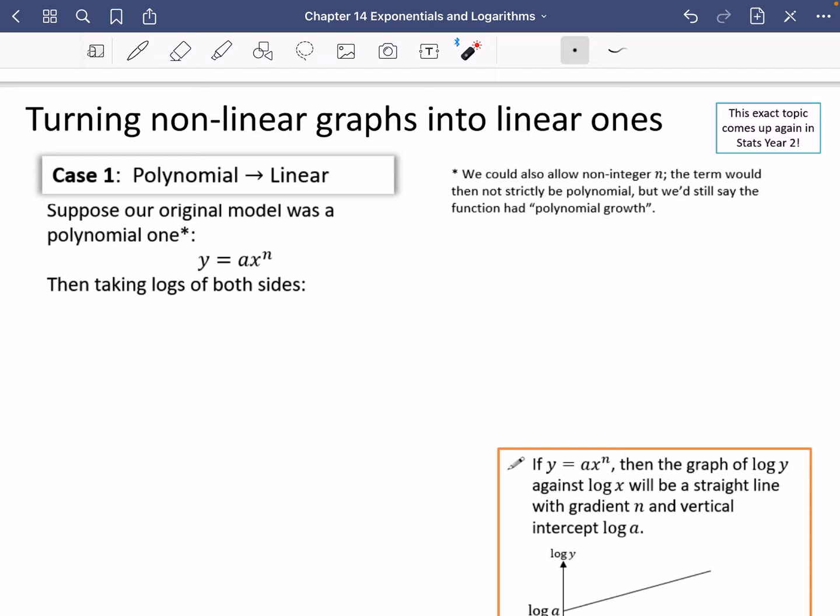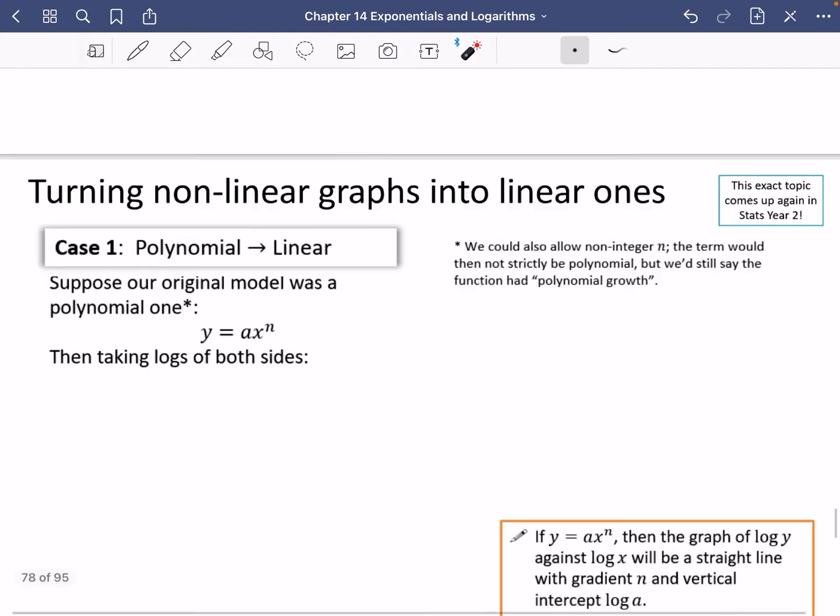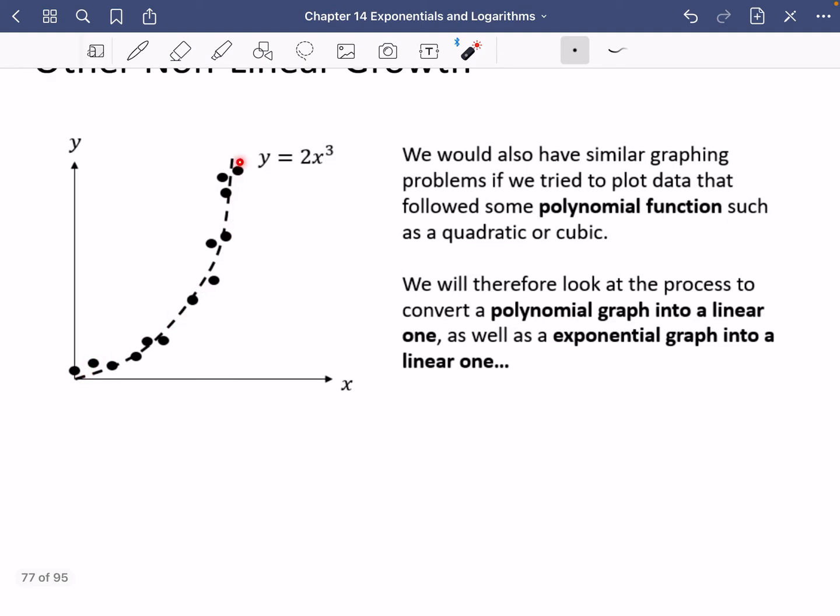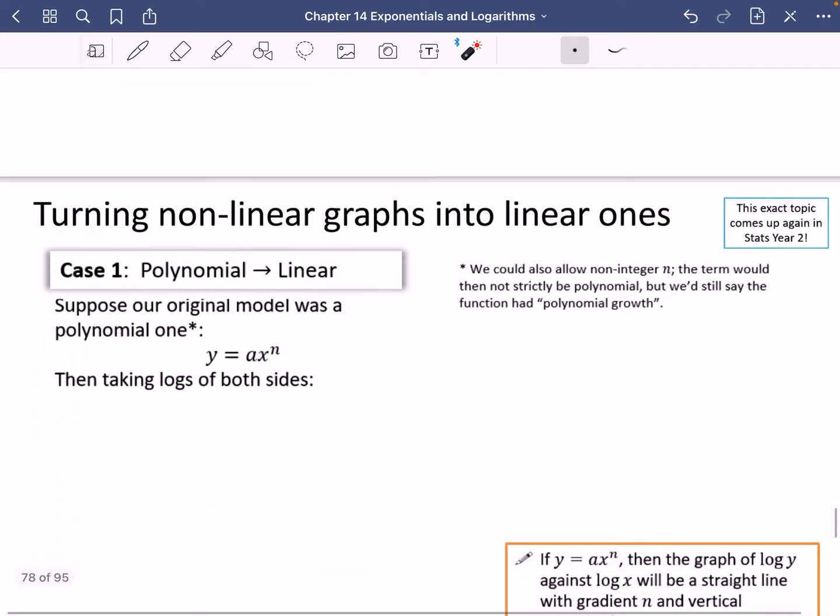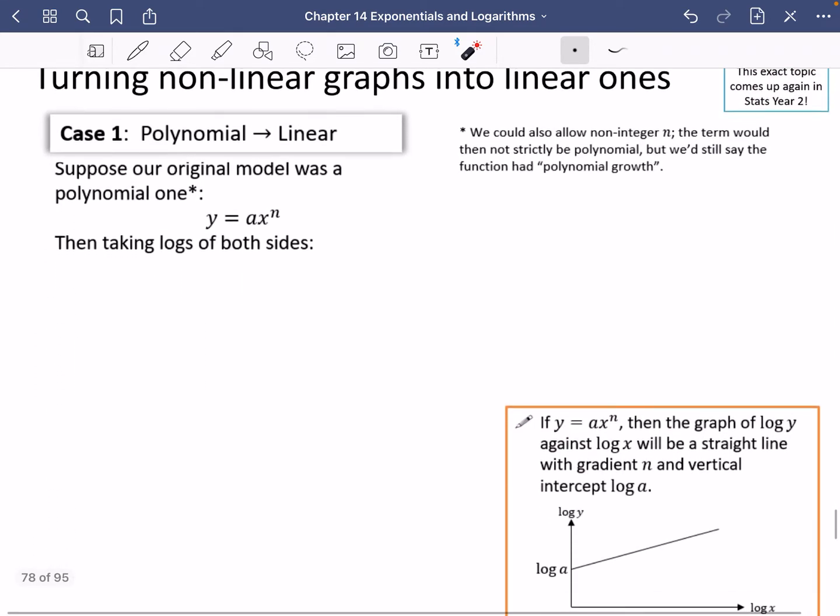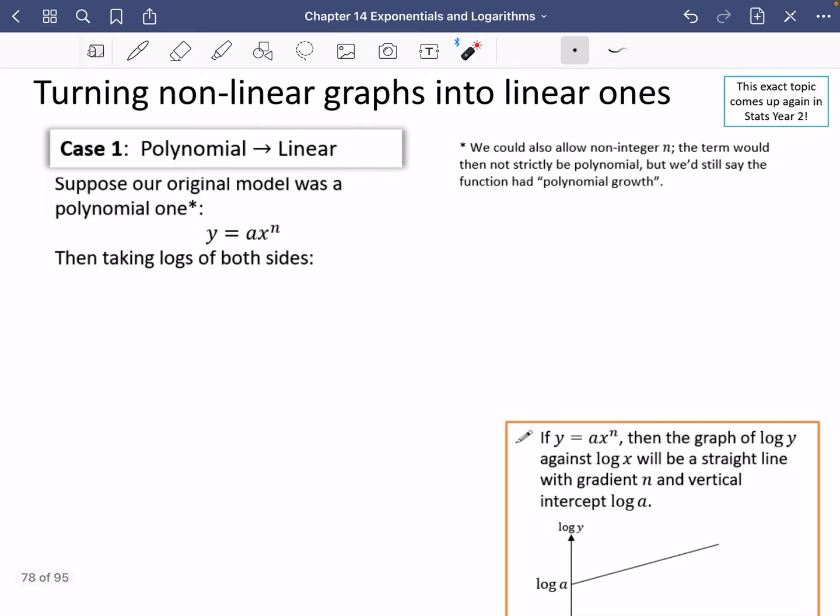So the first thing we're going to look at, Case 1, is turning from a polynomial kind of curve and trying to make it become linear on a graph. And what I mean by that is taking something like y equals 2x cubed and trying to fit it so we can turn it into a log graph instead. So suppose our original model was a polynomial one. For example, y equals ax to the n.